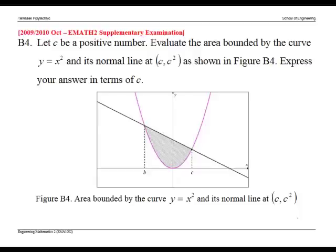This is a problem on finding areas. Let c be a positive number. Evaluate the area bounded by the curve y equals x squared and its normal line at c comma c squared as shown in figure B4. Express your answer in terms of c.